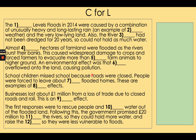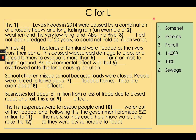Time to assess learning. Read the paragraph, put the correct words in the gaps, and then mark your answers. The answers are: 1. Somerset Levels floods. 2. Extreme weather. 3. Parrot. 4. Fourteen thousand. 5. One thousand. 6. Sewage. 7. Six hundred flooded homes. 8. Social effects. 9. Economic effects. 10. Pump water. 11. Dredging. 12. Roads. Give yourselves a mark out of twelve.